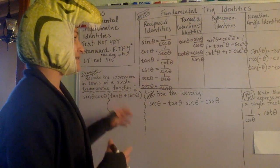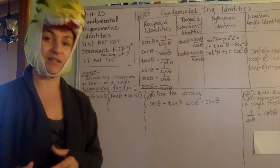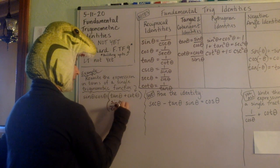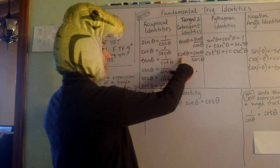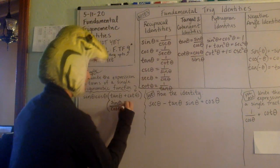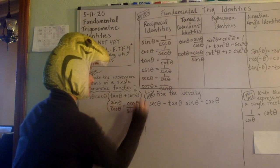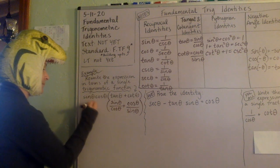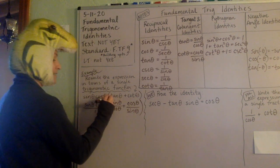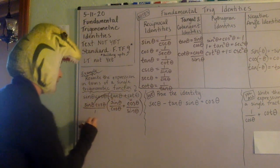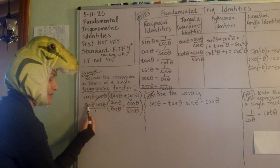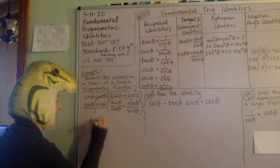Rewriting things in terms of sine and cosine is usually a good way to go, so let's replace tangent with sine over cosine, and replace cotangent with cosine over sine. Now I'll distribute sine times cosine across both terms. For the first term, the cosines cancel, leaving sine times sine — which is sine squared. For the second term, the sines cancel, leaving cosine times cosine — which is cosine squared.